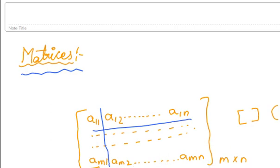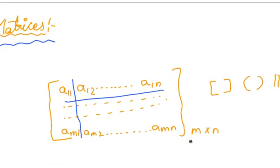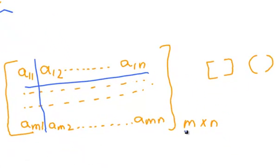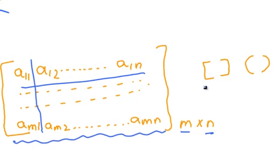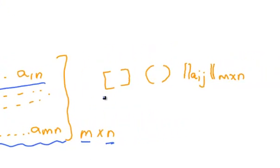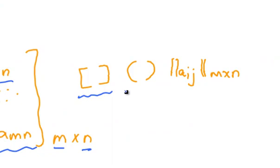The order of a matrix is read as m by n, that is rows by columns. A matrix can be represented as follows — it can be enclosed in square brackets, circular brackets, or similar notation.